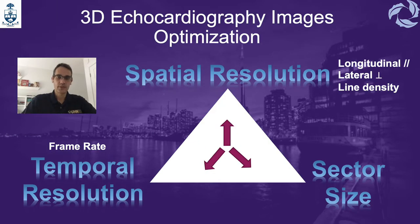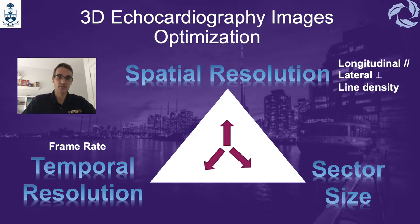To start with this presentation, the most important part in 3D echo optimization is to understand that it is dependent on three main things: spatial resolution, which is the ability of an ultrasound system to distinguish between two points at a particular depth, and it's dependent on the longitudinal resolution, the lateral resolution, and the line density; temporal resolution, which is dependent on the frame rate; and sector size, which is dependent on the size of the image.